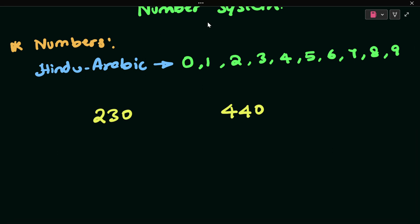When we write these numbers in a group — for example, 230, 440 — and so on. A group of numbers written together is known as a numeral.